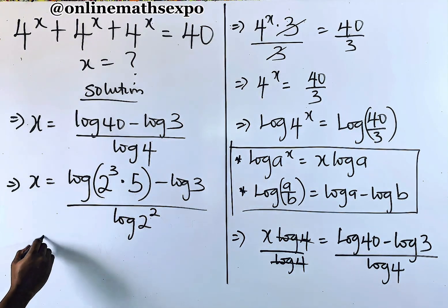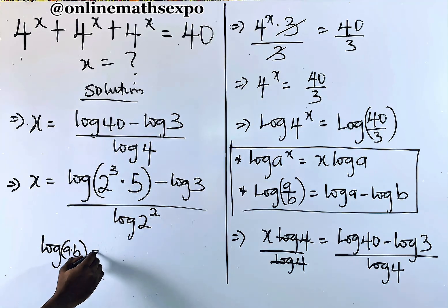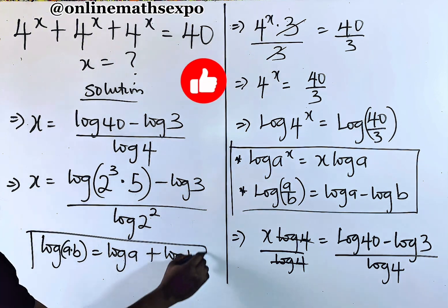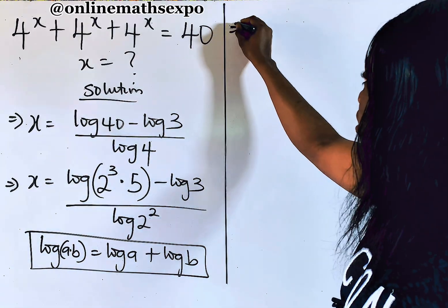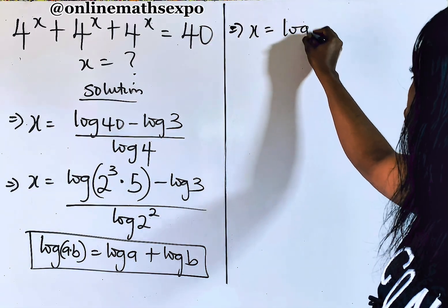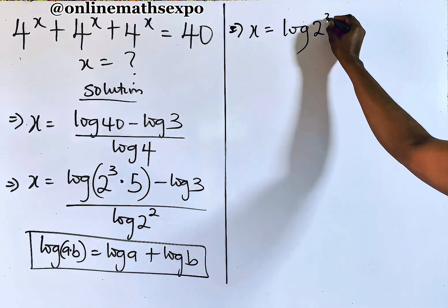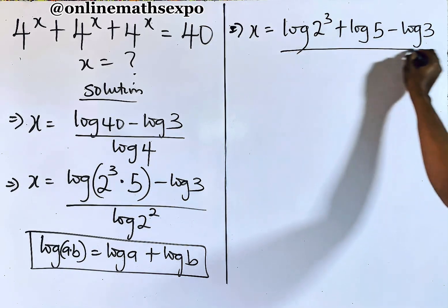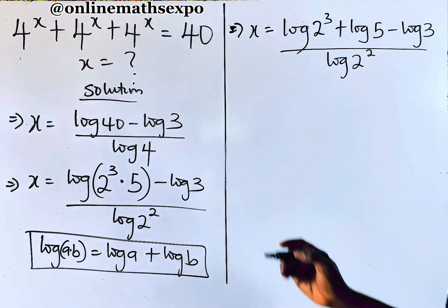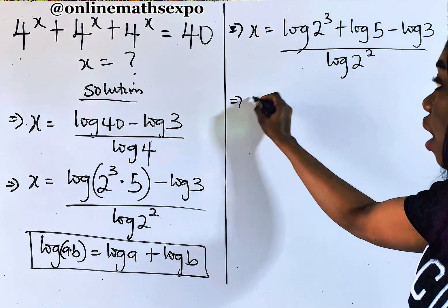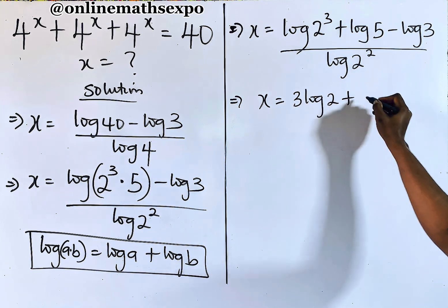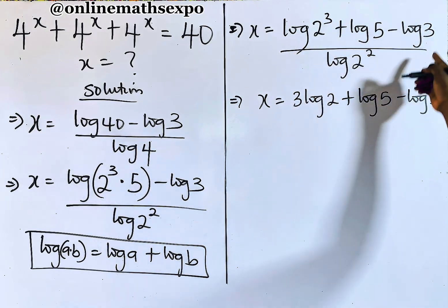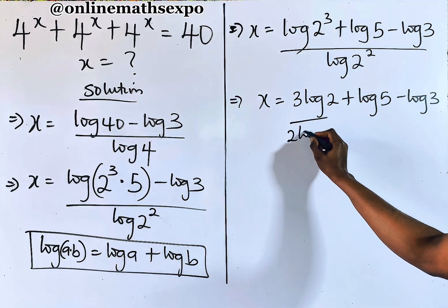Remember, for every log of a multiplied by b, it's always equal to log of a plus log of b — multiplication turns to addition. Applying this, we have x is equal to log of 2 to the power of 3 plus log of 5, minus log of 3, divided by log of 2 to the power of 2. Remember we said the power multiplies, so we have x is equal to 3 log 2 plus log 5 minus log 3.